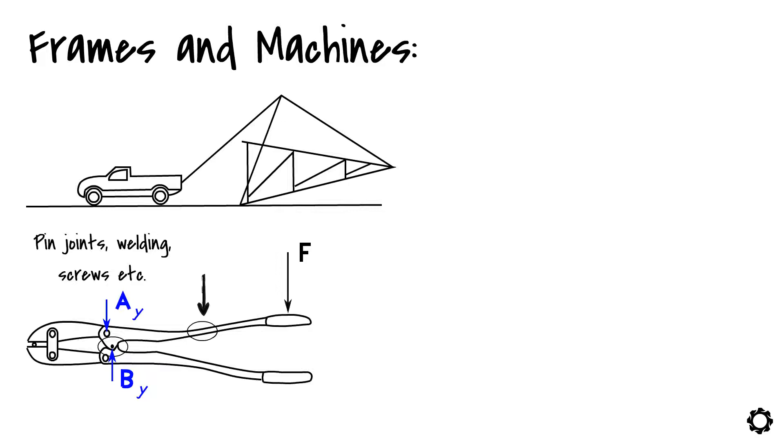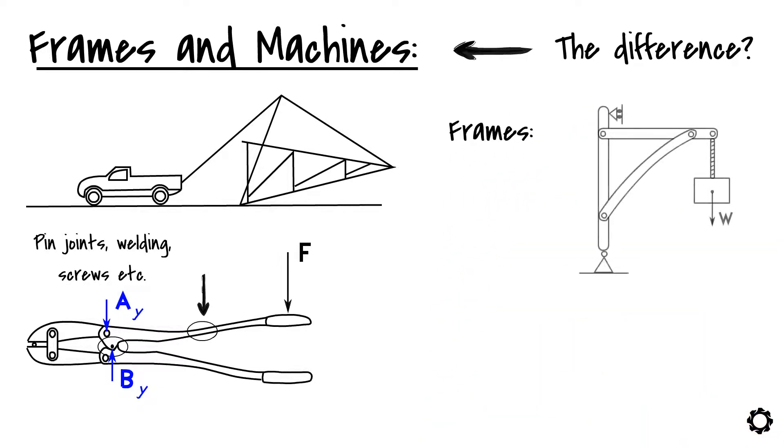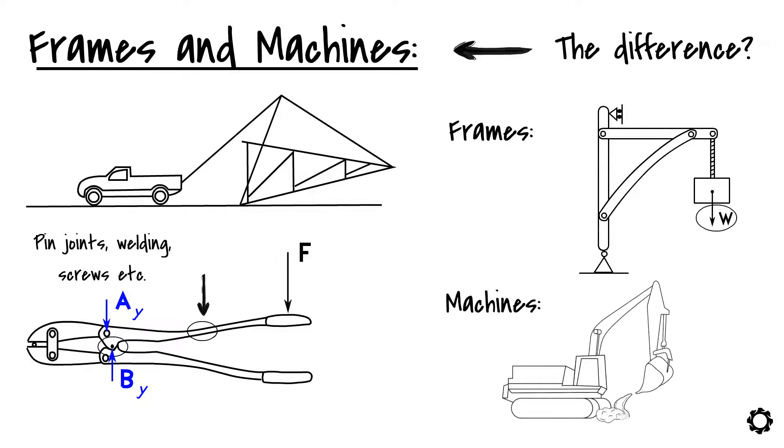Now that we know what kind of structures frames and machines are, you may be wondering what the difference between these two is. The difference is that frames are usually stationary structures which are carrying external loads, whereas machines are composed of moving components which are designed to transmit forces and also to change how these forces are affecting its surroundings.